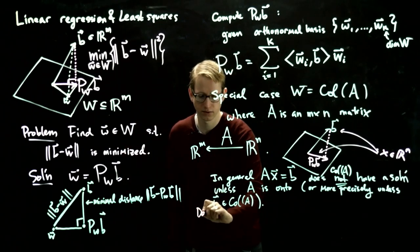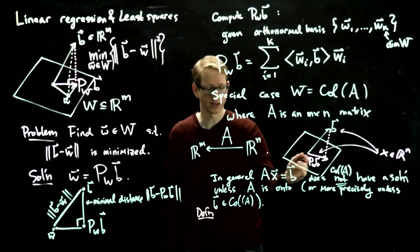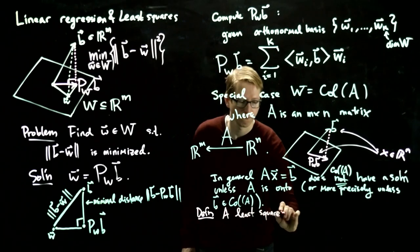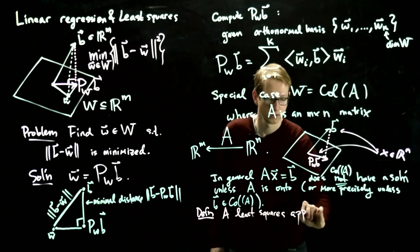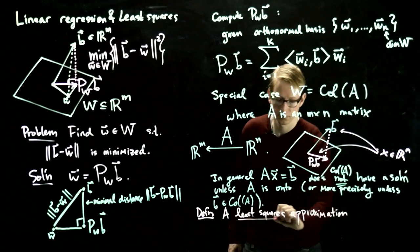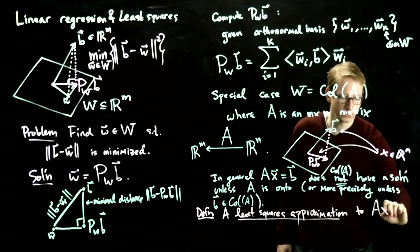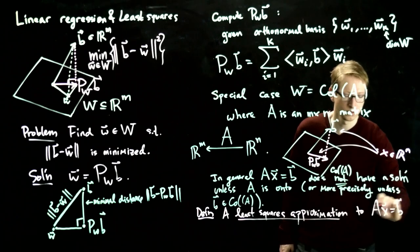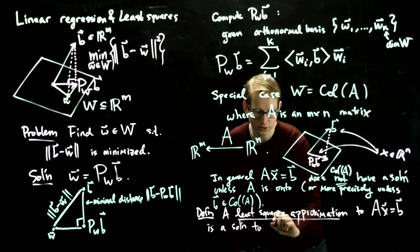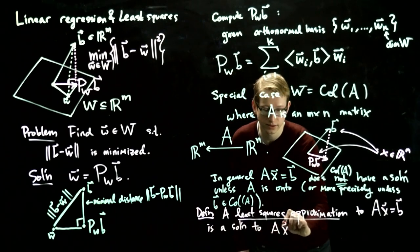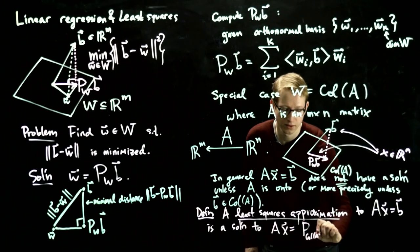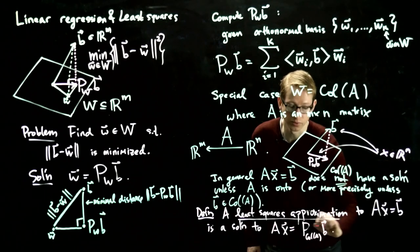So we make a definition based on this idea: a least squares approximation to the linear system Ax = b is a solution to the associated linear system Ax = P_Col(A)(b), where P_Col(A) is the projection onto the column space of A applied to our given vector b. And it's this problem that we'll be focusing on solving in the next few videos.